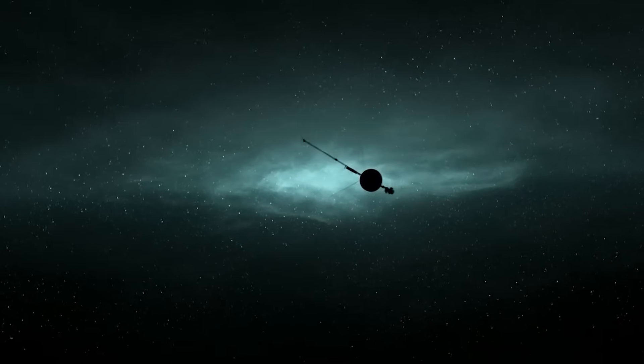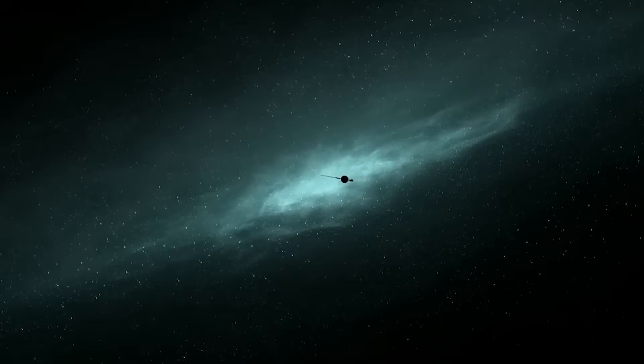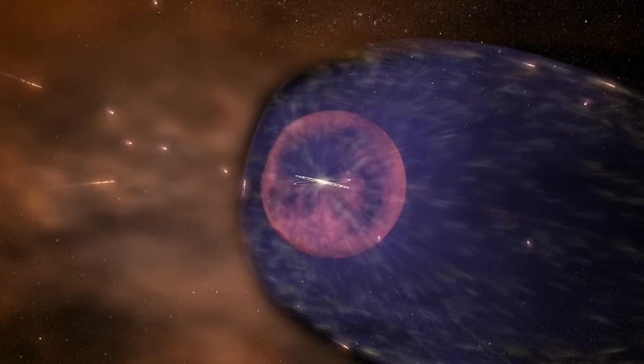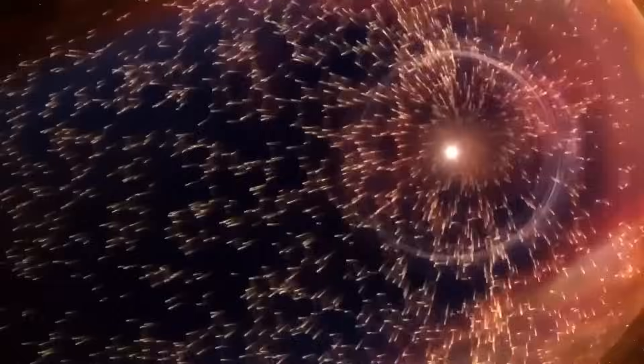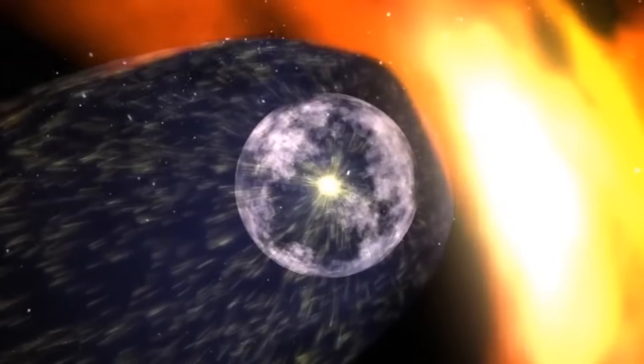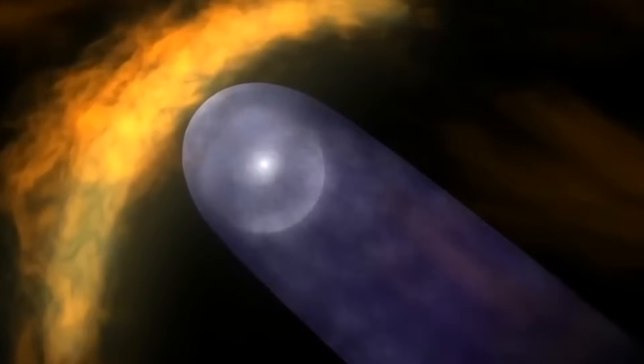In 2012, Voyager 1 achieved a historic milestone. It crossed the heliopause, the boundary where the sun's influence ends and interstellar space begins. It became our first interstellar ambassador, venturing into a realm where no spacecraft had gone before.